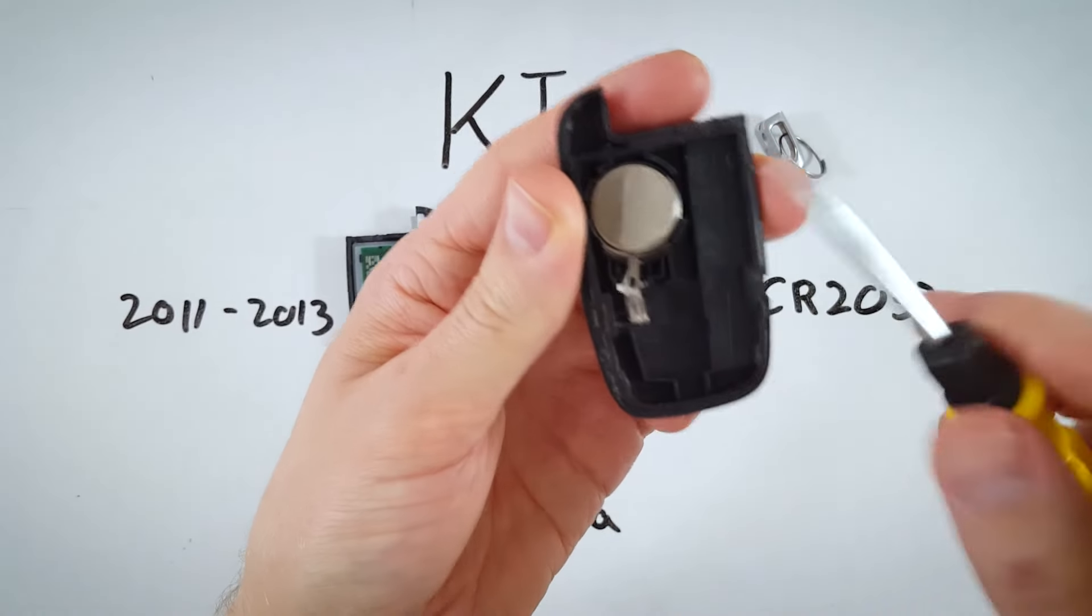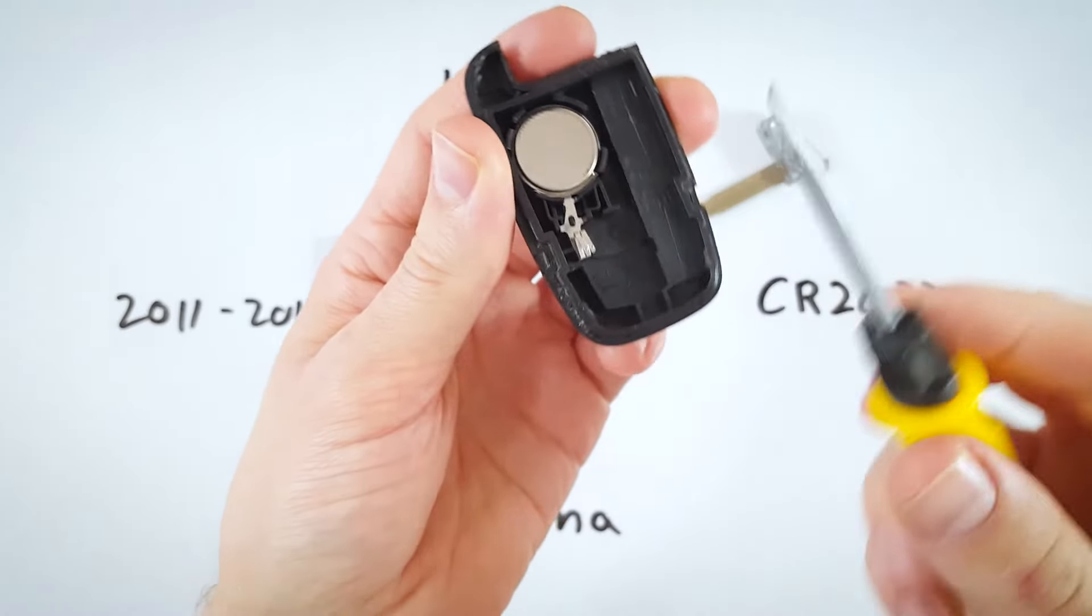Here is our battery and with the very same tool you can just get under, maybe coming in from the side, you can just lift it out and it will pop out like that. And here we go, CR2032.